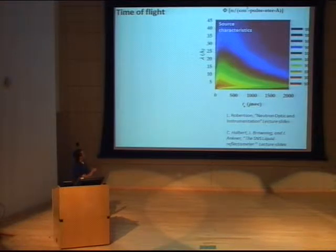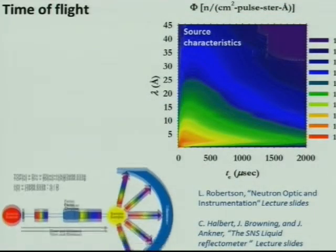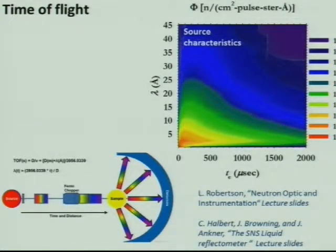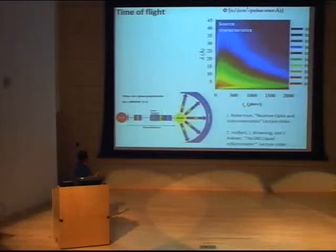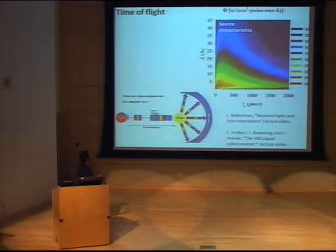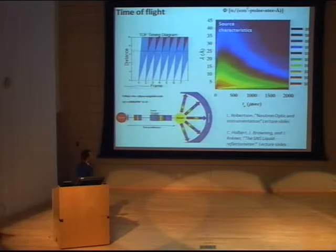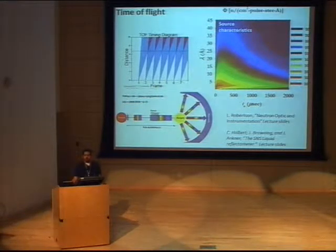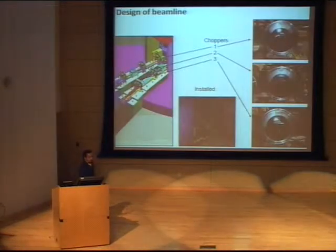When designing the beam line for reflectivity, the beam scientists looked at the characteristics of the source — the white beam. As we remember from the optics lecture, in order to do the time-of-flight approach to get energy-dispersive or lambda-dispersive measurements at the detector, we need to use a chopper. The chopper singles out a small bandwidth of wavelength, hits your sample, and then you collect the time of flight at the detector. We need a small bandwidth of wavelength to avoid the slowest wavelength from the first pulse overlapping with the fastest wavelength from the second pulse.